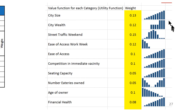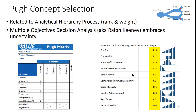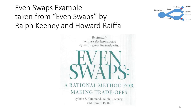These utility functions can take on different shapes — it's not always just upward trending. It could be that you want to be at either end of the range, not in the middle. These are not necessarily related to these specific categories; it's just a conceptual idea. You then have weights associated with them that generally total 100%. But I really don't like this process either. I really don't like the ranking and weighting even if it's probabilistic. The following example comes from Even Swaps by Ralph Keeney and Howard Raiffa.